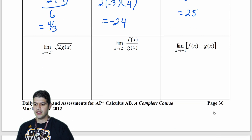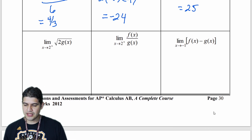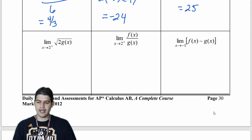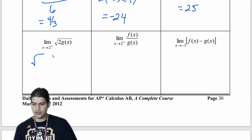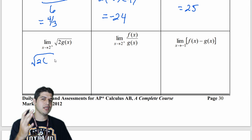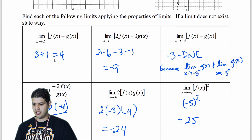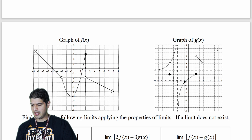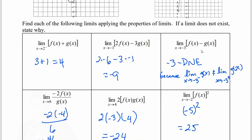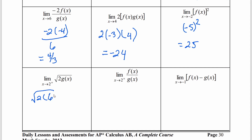Next is the square root of 2 times g of x, and we're looking at the limit as x approaches 2 from the right. Going to g of x at 2 from the right, the y-value approaches 6. So we have the square root of 2 times 6, which is the square root of 12. That simplifies: 4 times 3 is 12, the square root of 4 is 2, leaving 2 times the square root of 3.